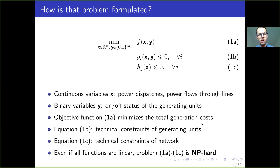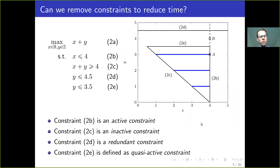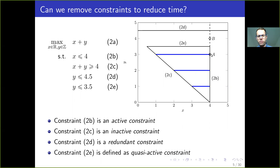Even in the case that all these constraints are linear, this problem is NP-hard just because of its combinatorial nature. For example, here we have a mixed integer linear optimization problem with one continuous and one discrete variable and four constraints. Since the blue points are the only feasible solutions, and since we are trying to maximize x plus y, point A is the optimal solution.